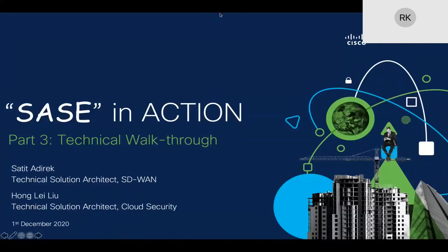A brief recap in case you missed the previous sessions. On the 3rd of November, we had part one with Danny Smulders, the APJC manager for SD-WAN, who covered the journey to SD-WAN and multi-cloud, focusing on the business drivers. On the 17th of November, we had part two — Kien Hau, Shamil, and Syed covered 'Get SASE with Cisco,' going into the architectural details of SD-WAN plus SASE.